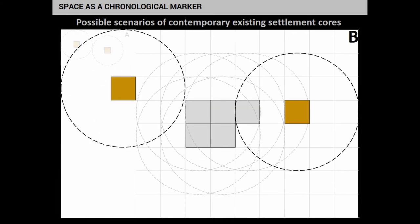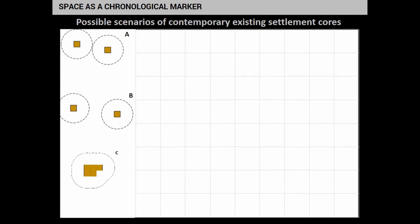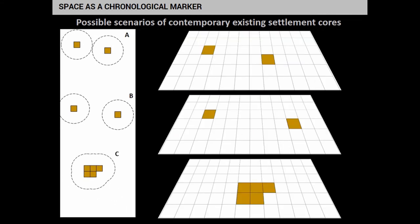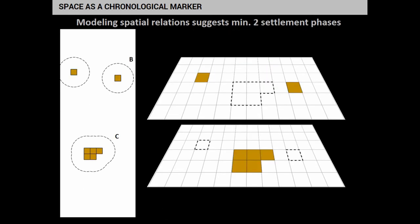We can construct possible scenarios where the areas do not overlap, which would mean there have to be at least three settlement phases. But we can further reduce this result because we are looking for the most simple explanation. We can reduce it to those two scenarios which sufficiently describe our observation in light of the theory. We see that there were a minimum of two settlement phases. Using this approach, and thanks to Metacentrum — a grid computing center available for free to all academic institutions in the Czech Republic — we are able to calculate this model for the whole area.